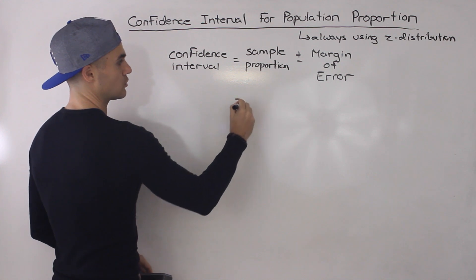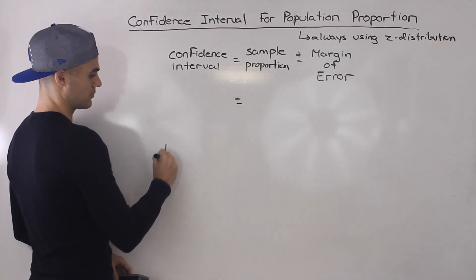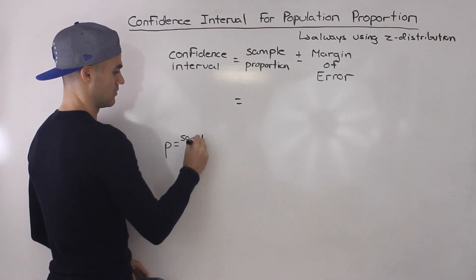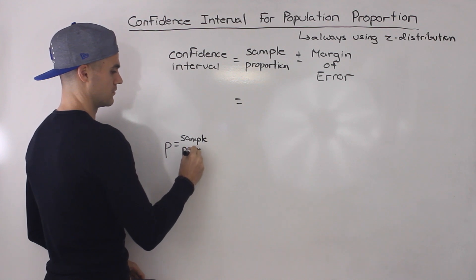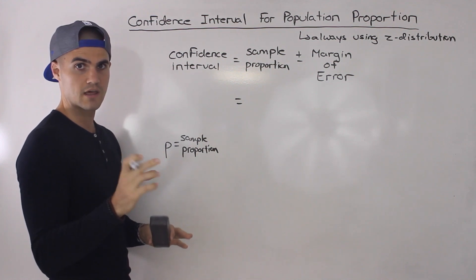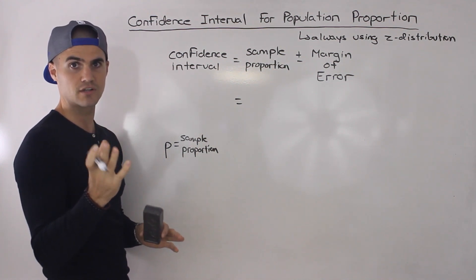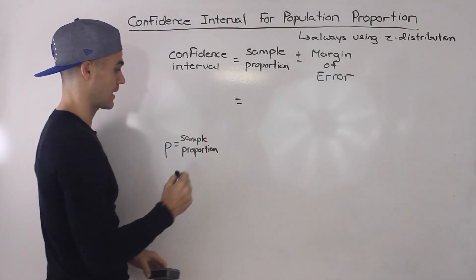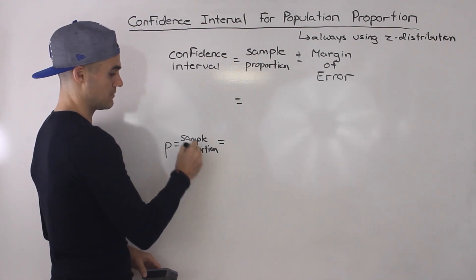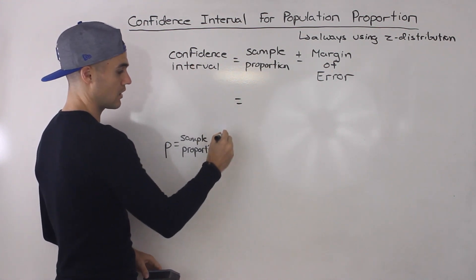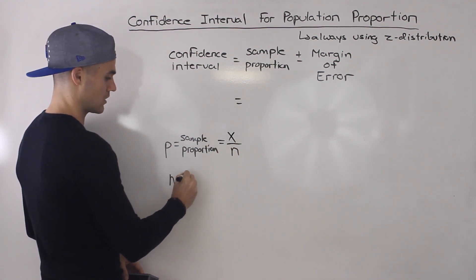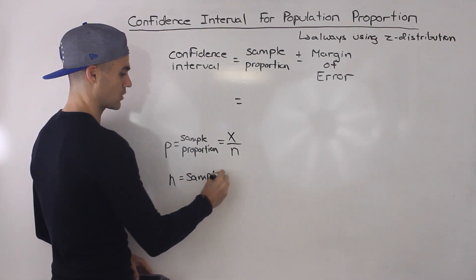Let me introduce some new variables. I'm going to let p equal the sample proportion — remember, the proportion is the percentage of items that contain a certain characteristic from the amount you're looking at. In the stats calculator you'll see two inputs when dealing with a confidence interval: an input for x and an input for n. N, as we know, is basically the sample size you're working with.